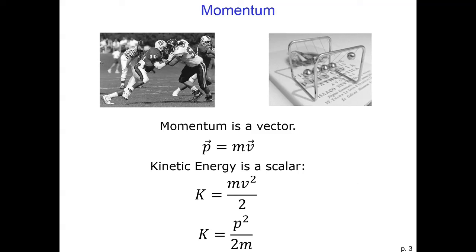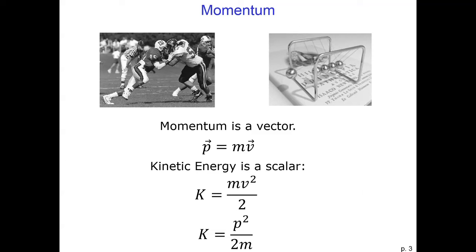Today we're going to begin a new unit on momentum and impulse. Momentum is sometimes called linear momentum to distinguish it from angular momentum, which is another important concept we'll cover in about two units from now. Momentum is the mass of an object times its velocity, and it is represented by the letter p.